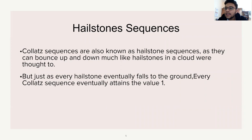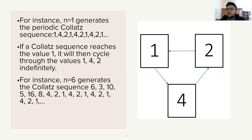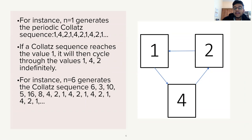The second similarity is that just as every hailstone eventually falls to the ground, every Collatz sequence eventually attains the value 1. For instance, n equals 1 generates the periodic Collatz sequence 1, 4, 2, 1, 4, 2 and so on — because once it reaches 1, it indefinitely revolves around those same three numbers: 1, 4, 2.